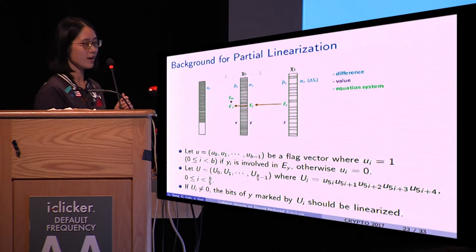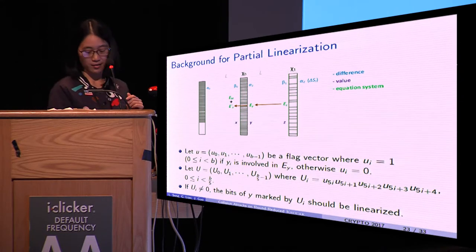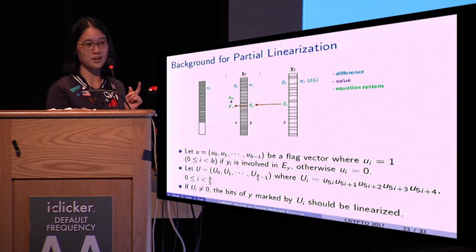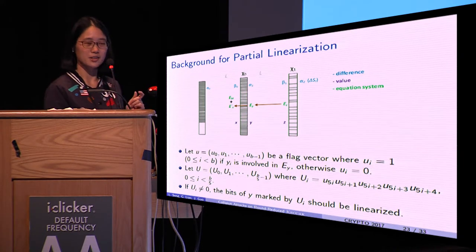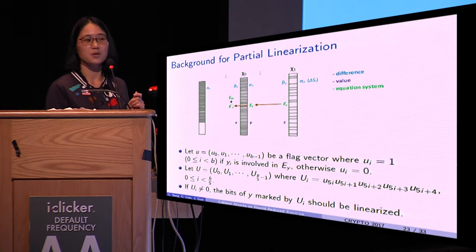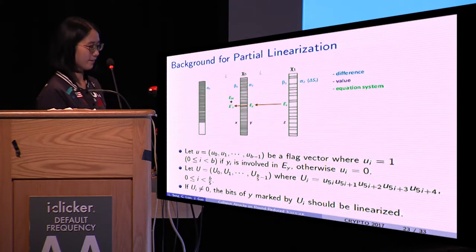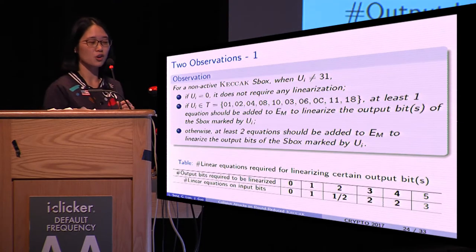If capital U_i is not zero, then the bits of Y marked by U_i should be linearized. That is to say, for the bits which are not marked by U_i, there is no need to linearize them.